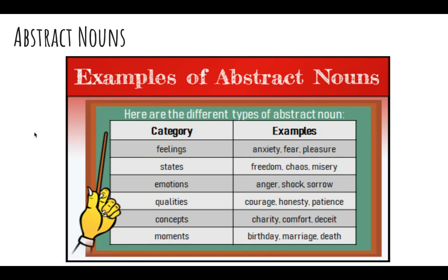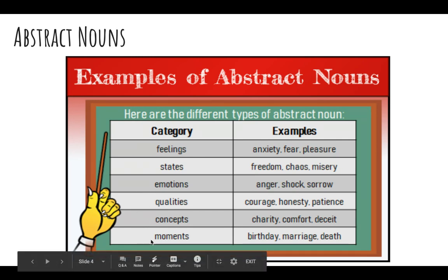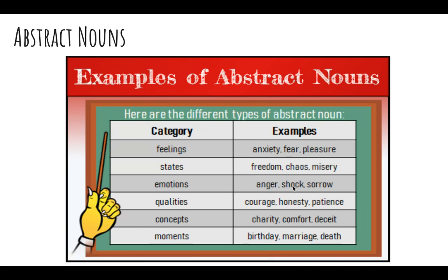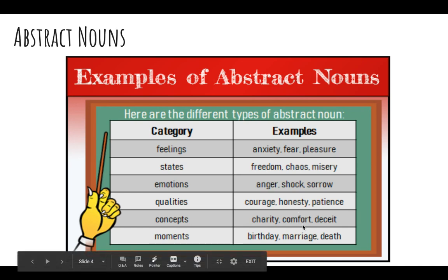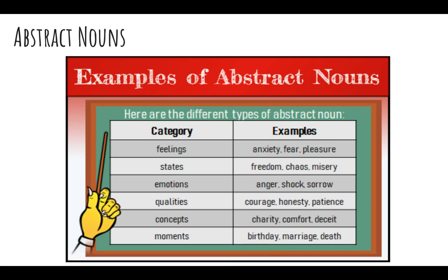Abstract nouns are nouns that are not physical — you cannot physically touch them. So like a refrigerator, you can physically touch it. But you also have nouns that are feelings, states, emotions, qualities, concepts, and moments. Those things are not things you can touch, but they're still nouns. For example: fear — you can't touch fear, but it's still a noun. Anger, misery, honesty, comfort, birthdays — all of those things are nouns. They're just not physical things you can touch, so they're abstract nouns.